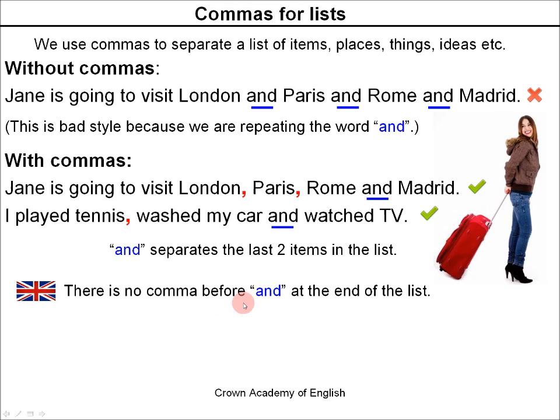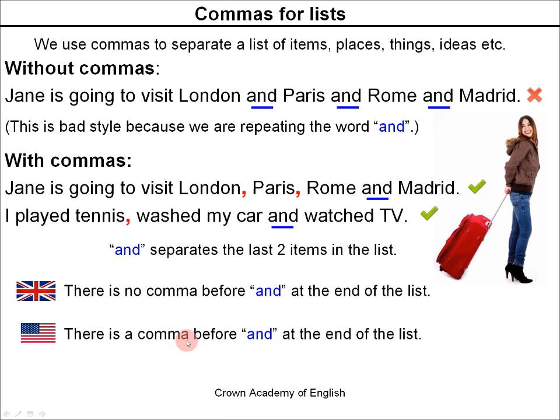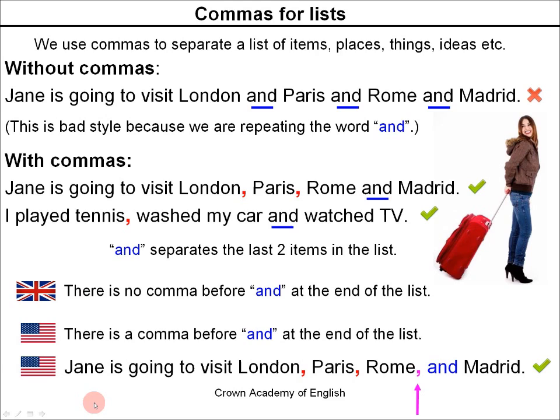In American English, there is a comma before AND at the end of the list. For example: 'Jane is going to visit London, Paris, Rome, and Madrid.' So American English does put a comma here. This comma has a special name — it is called the Oxford comma. The general rule is: in British English, we do not write the Oxford comma. In American English, they do write an Oxford comma.